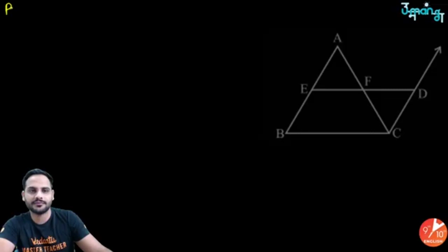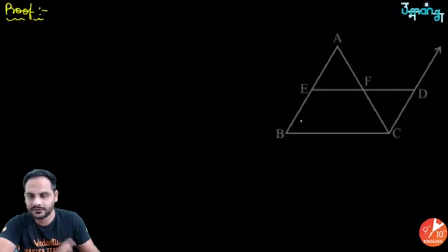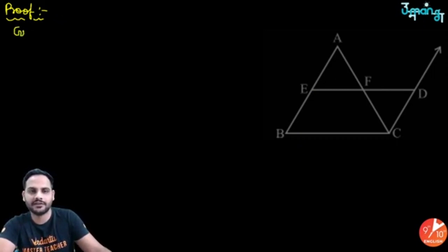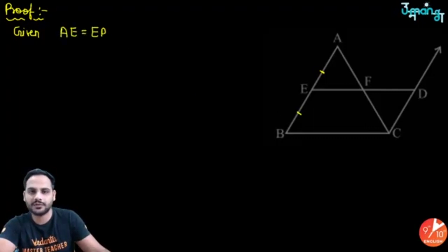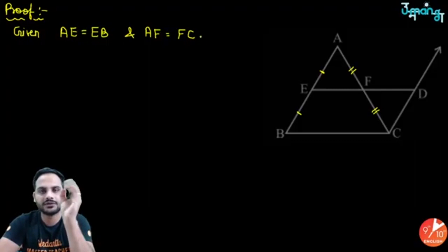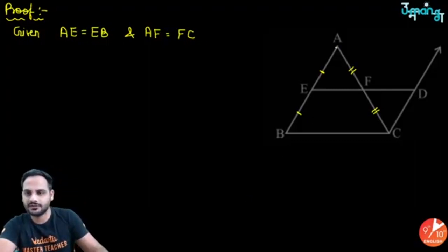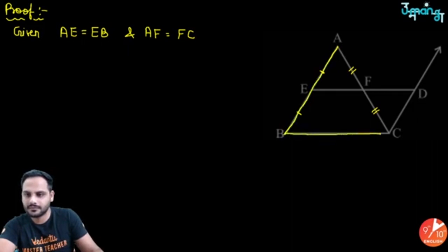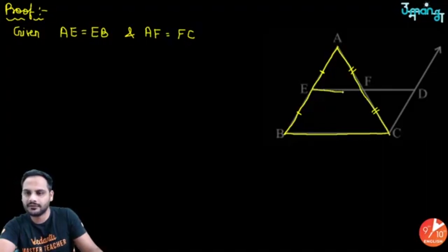Now let's look at the proof. For the proof, what is given? Given: AE = EB (E is midpoint of AB) and AF = FC (F is midpoint of AC). Triangle ABC is our triangle, and EF is the line joining the midpoints.